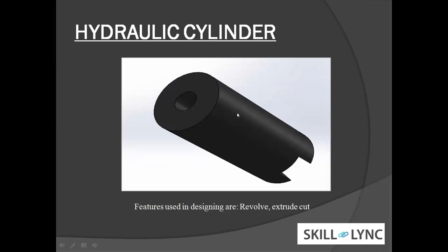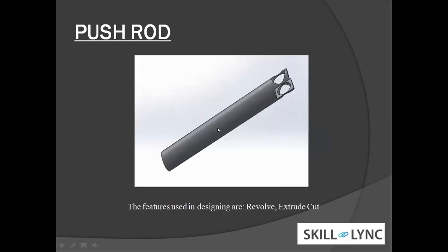This is the hydraulic cylinder, which is used to tilt the fork. The features used are revolve and extrude cut. The push rod sits inside the hydraulic cylinder — hydraulic pressure acts on this push rod, which then pushes the fork sideways up and down. Features include revolve and extrude cut.